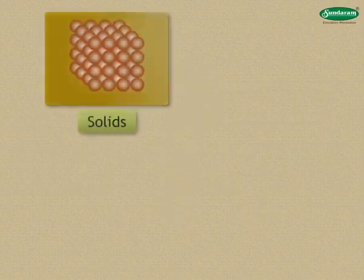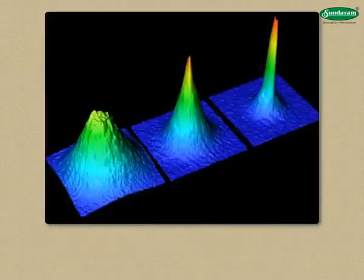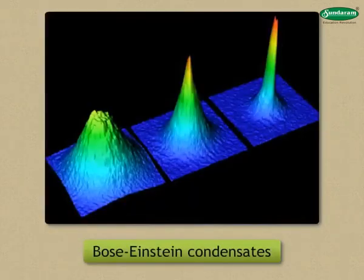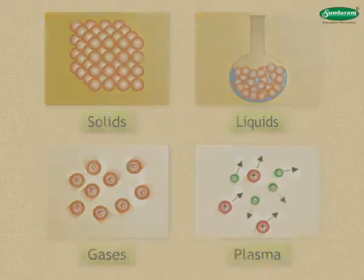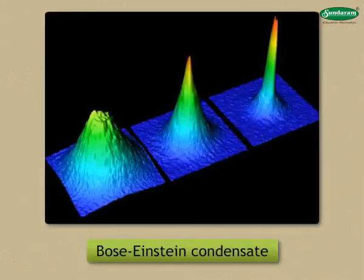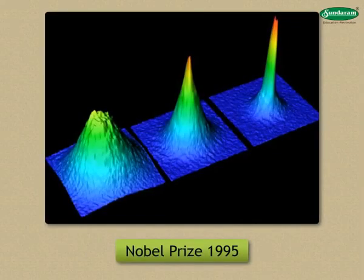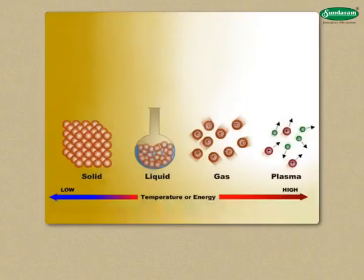Do you know about solids, liquids, gases, plasma, and a new one called Bose-Einstein condensates? The first four have been around a long time. The scientists who worked with the Bose-Einstein condensate received a Nobel Prize for their work in 1995. A state of matter is about the physical state of molecules and atoms, and each of these states is also known as a phase.